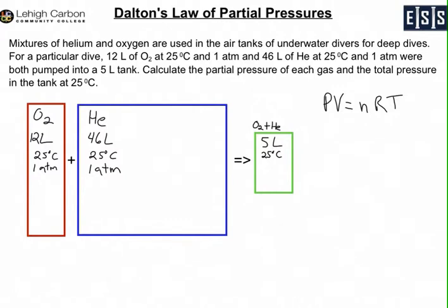For the tanks on the left, the oxygen and helium, we know the volume, temperature, and pressure. So you can calculate the moles by taking the ideal gas law and converting it. The number of moles is going to be n equals PV over RT.